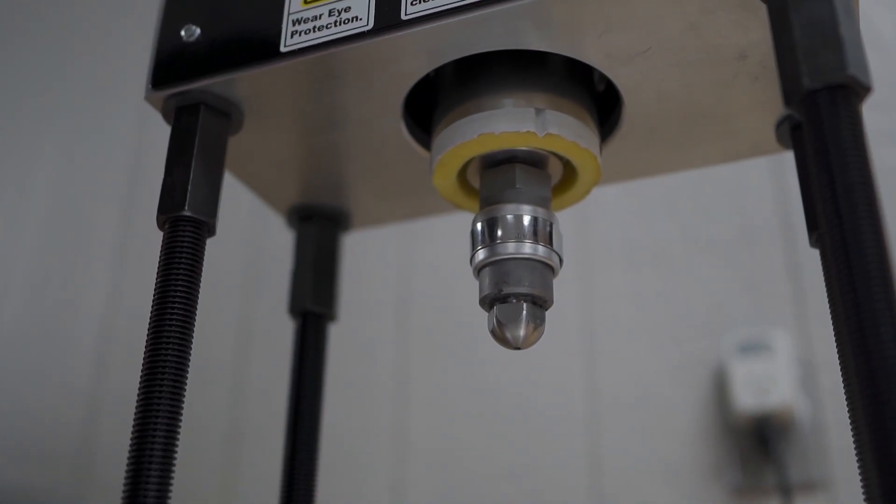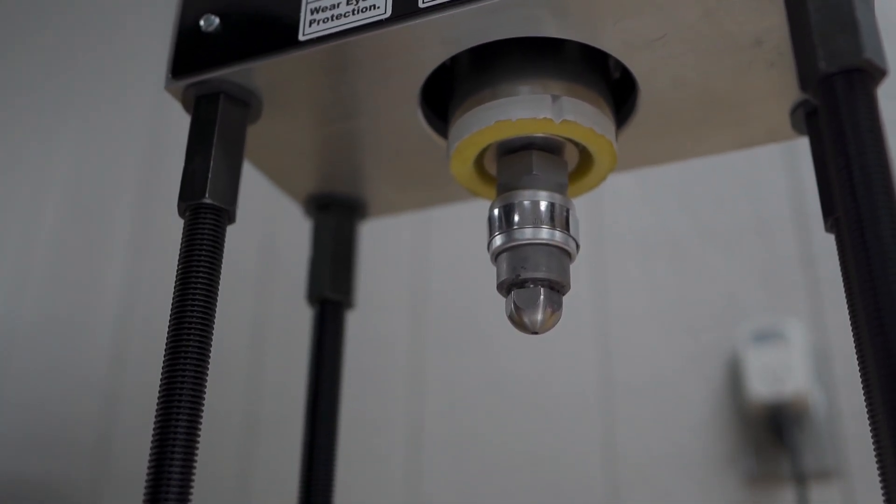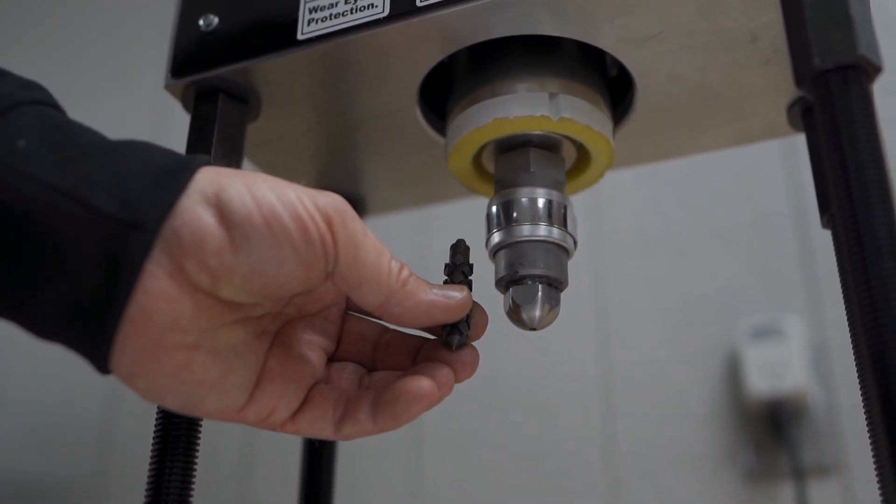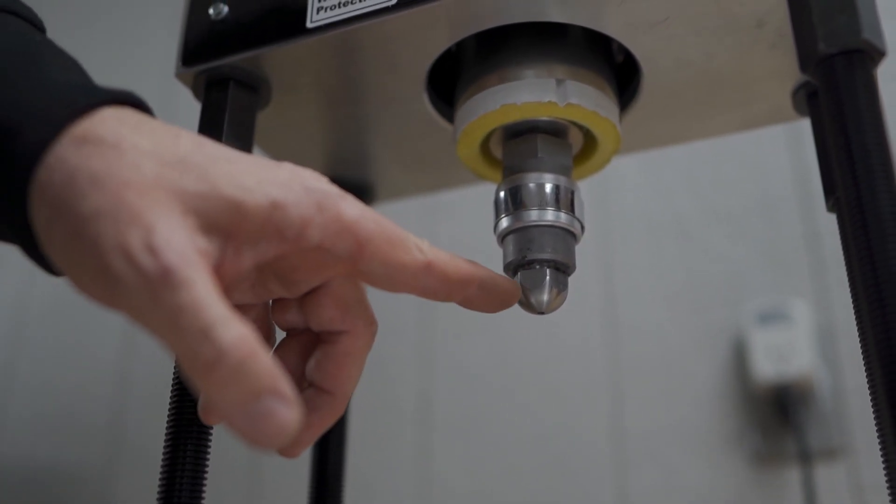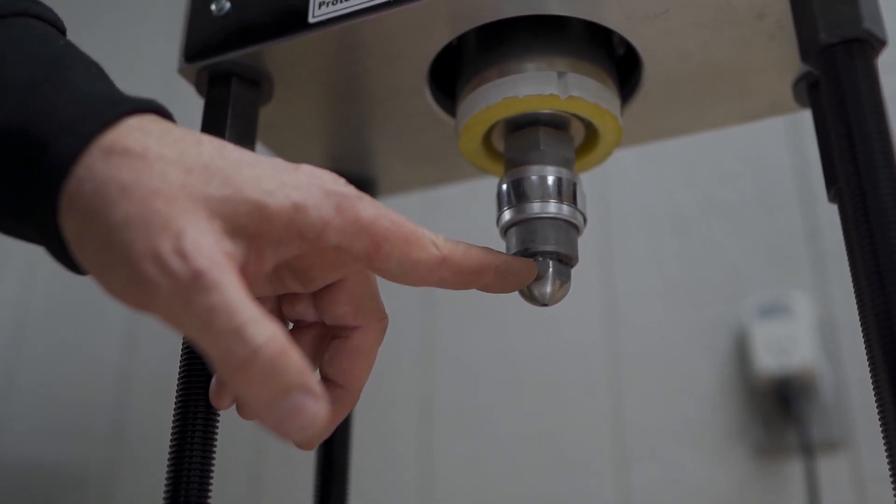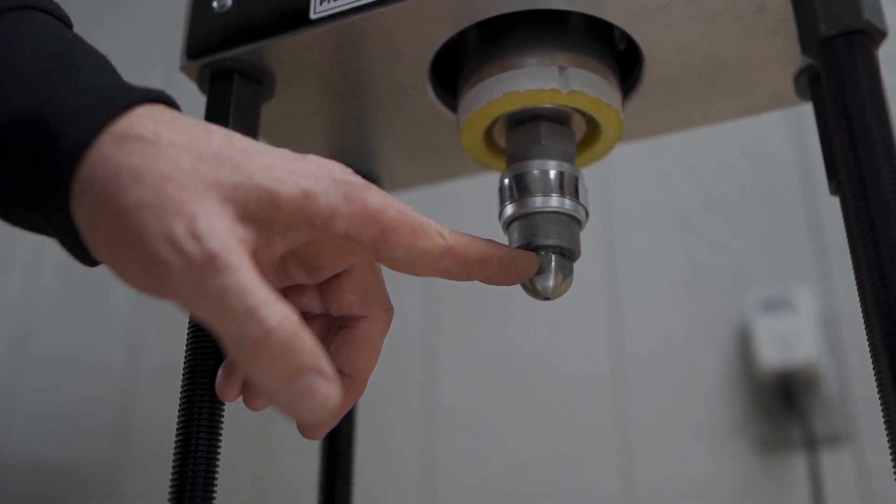But if you've already run plastic, you're going to have to get the plastic out in order to get the mixing element up in there. So what you would do is you would remove the tip while the machine is still warm and the plastic is molten.